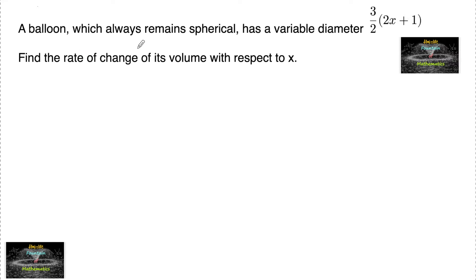A balloon which always remains spherical has a variable diameter equal to (3/2)(2x + 1). Find the rate of change of its volume with respect to x.